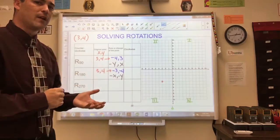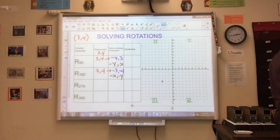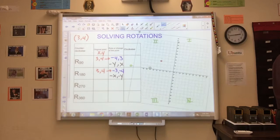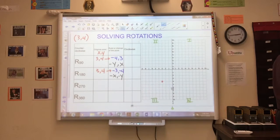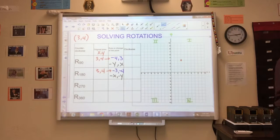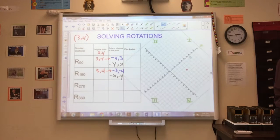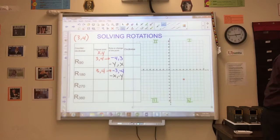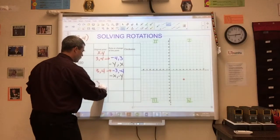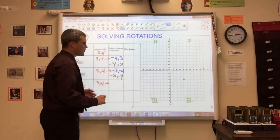And finally, for a 270 degree rotation, I would go back to my original point and show the rotations. Starting with point 3, 4, how have we changed it?